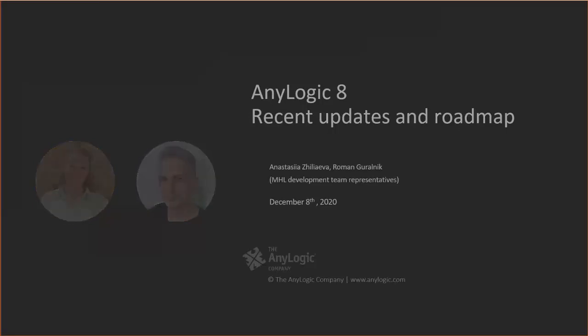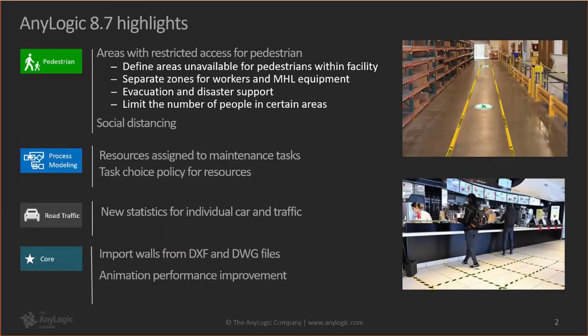Today we're going to make a brief overview of AnyLogic 8.7 new features and go through features coming in the next releases. One of the biggest features of 8.7 was areas with restricted access in the Pedestrian library. This is similar to a feature some people may already know from the Material Handling library, where you can limit the number of transporters and their access to different areas.